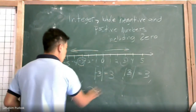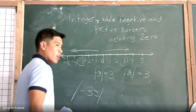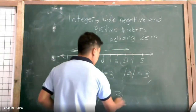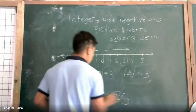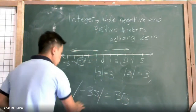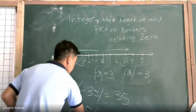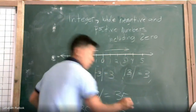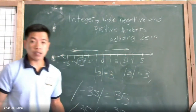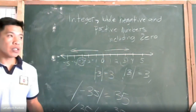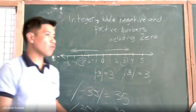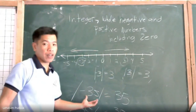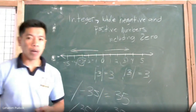For example, the absolute value of negative 35 is 35, and the absolute value of 35 is also 35. In absolute value, the result is the number itself and it is always positive.